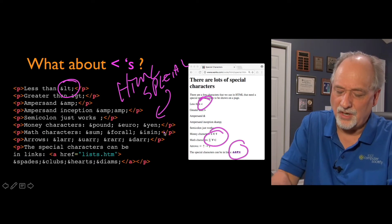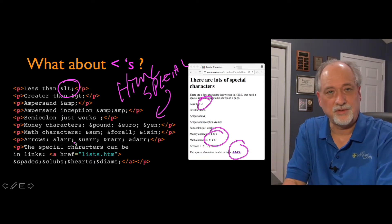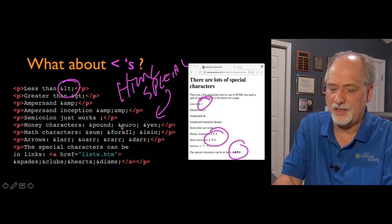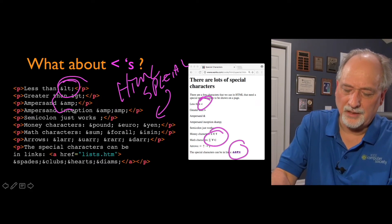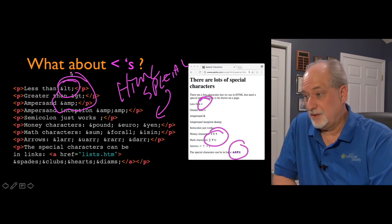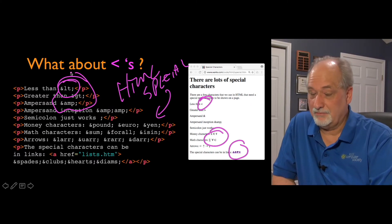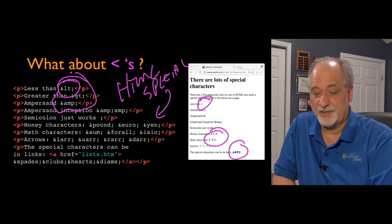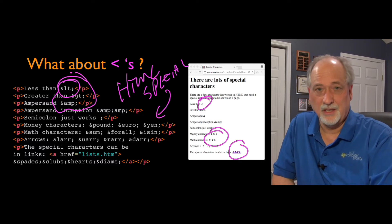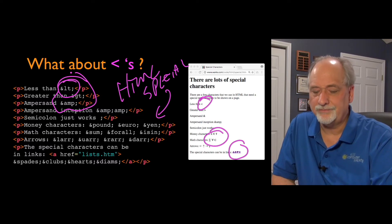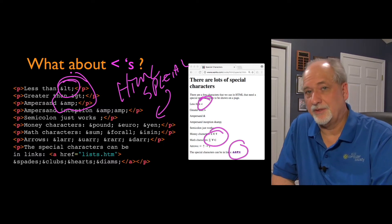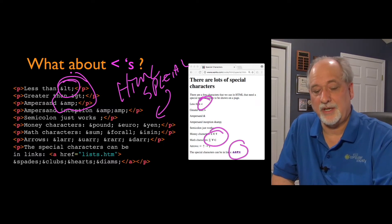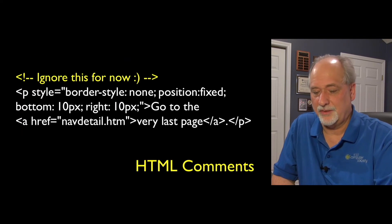The key ones you really need to know about are less-than, greater-than, and ampersand — because ampersand itself becomes a special character. To represent less-than, you do ampersand-LT-semicolon; for greater-than, ampersand-GT-semicolon; and for ampersand itself, ampersand-AMP-semicolon.